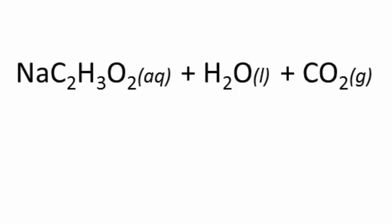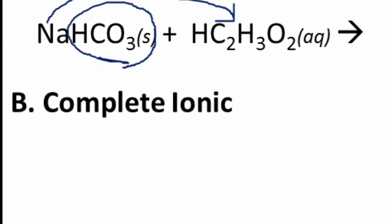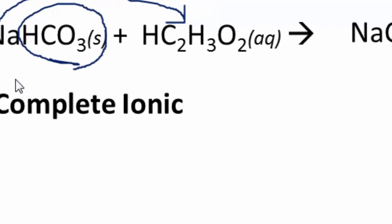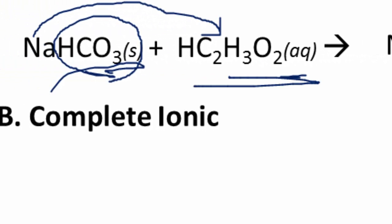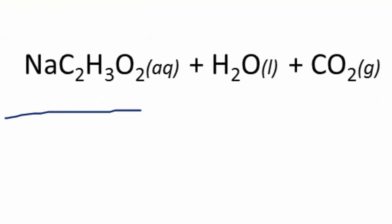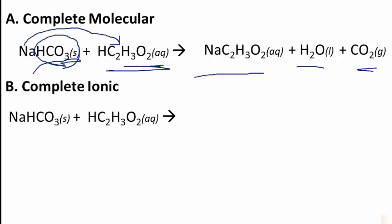Next, the complete ionic equation — you split up anything that's aqueous. Sodium hydrogen carbonate is solid, so it is not split up. Vinegar is aqueous, but acetic acid is a weak acid: it dissolved in water but did not ionize into ions, so it is not split up. You only split up strong acids. However, sodium acetate is aqueous (Group 1A, completely soluble), so it will be split up. Water is liquid and carbon dioxide is gas, so neither is split. Because baking soda is solid and acetic acid is weak, the reactants look exactly the same.